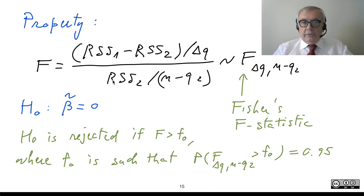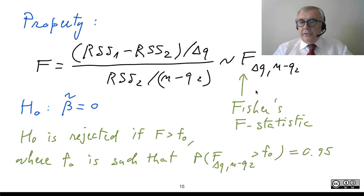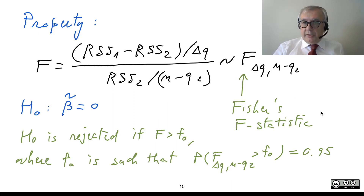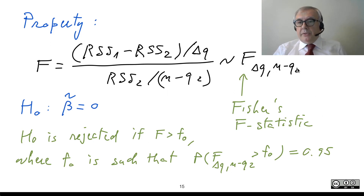This quantity, called capital F, is a realization of a Fisher's F random variable — a random variable somewhat similar to a chi-square, with two degrees of freedom parameters that must be specified as two integer numbers.